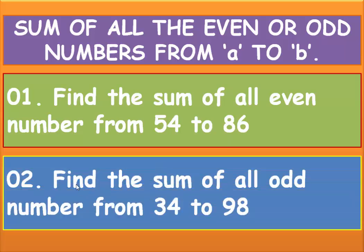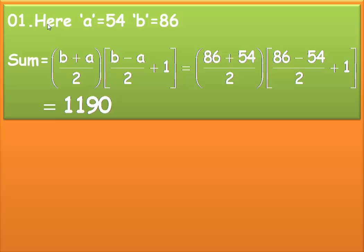The formula for the sum of all even numbers in a range is: sum equals (b plus a) divided by 2, multiplied by (b minus a) divided by 2, plus 1. So it is (86 plus 54) divided by 2, into (86 minus 54) divided by 2, plus 1. That equals 1190.